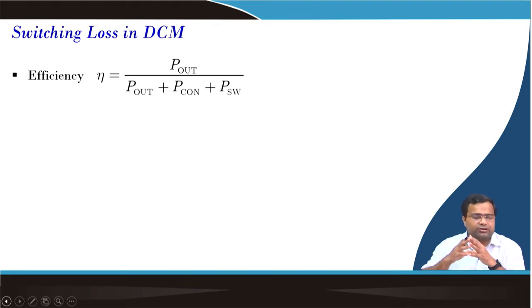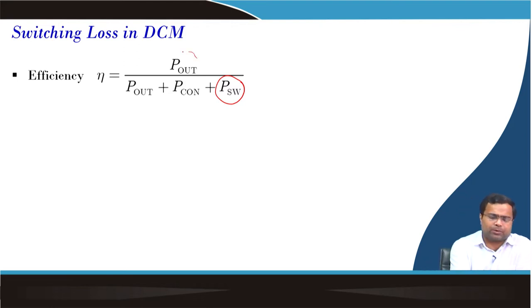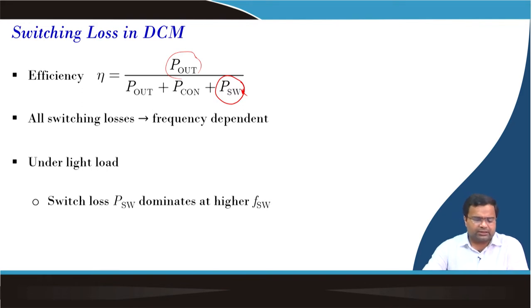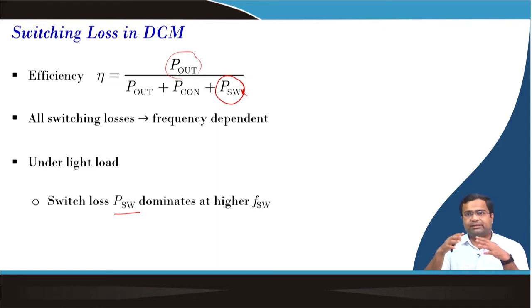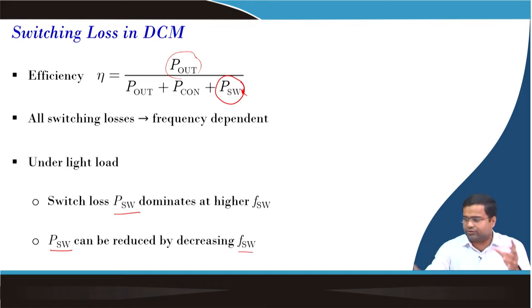In discontinuous conduction mode, as the load current decreases, switching loss — particularly driver loss — becomes fixed. As output power decreases, this loss becomes dominant since all switching losses are frequency dependent. Under light load conditions, switching loss dominates because output power is reduced, causing switching efficiency to go down. Therefore, we need to reduce switching loss by reducing the effective switching frequency.